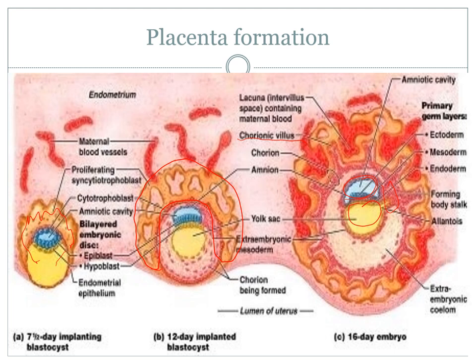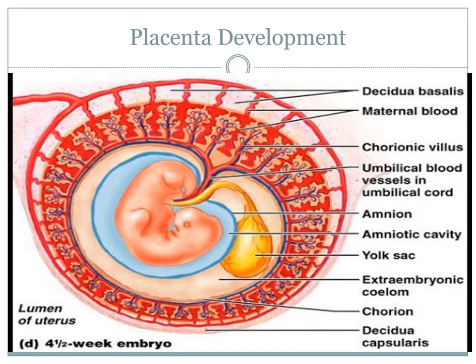Once we get to about day 16, the blastocyst is completely encapsulated within the uterus itself, and from there we have very specialized baby and mum structures that help form the placenta. The chorionic villi extend out, releasing enzymes, drawing on mum's material, combining next to mum's circulation, and forming the outer placental wall, the amniotic cavity, and the mum-baby blood barrier. The placenta will be finished developing around the four-and-a-half-week mark.